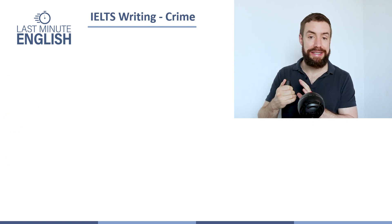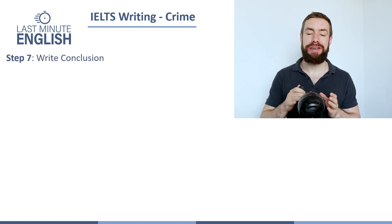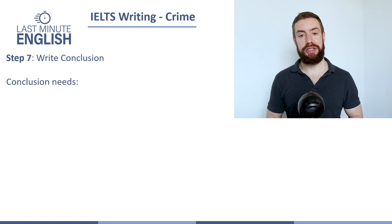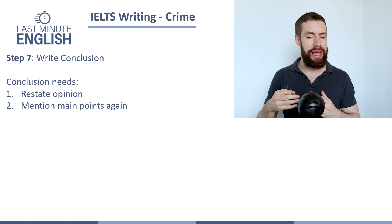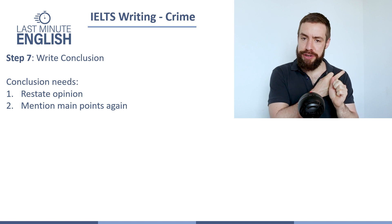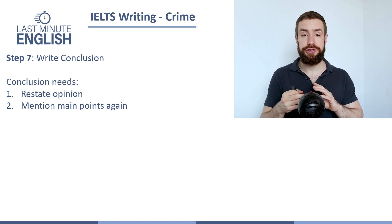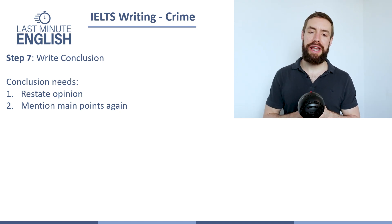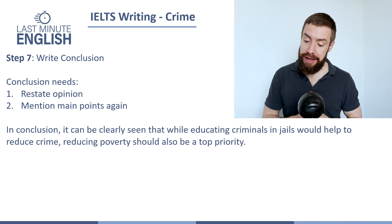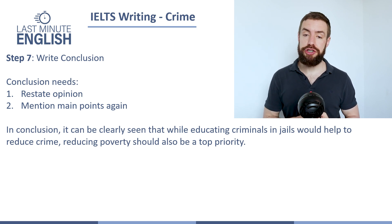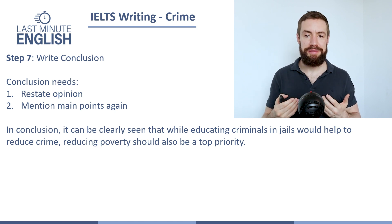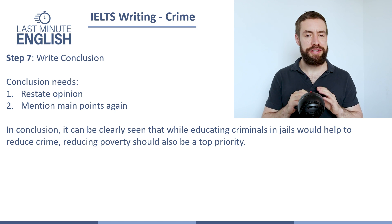Once we've finished our first and second body paragraphs, we get to step seven: writing the conclusion. The conclusion needs two parts: restate the opinion we have — in our case, that we partially agree — and mention our main points again: educating criminals and reducing poverty. If we do things well, we can do it in just one sentence. For example: 'In conclusion, it can be clearly seen that while educating criminals in jails would help to reduce crime, reducing poverty should also be a top priority.' We've mentioned both main points, given the opinion, and summarized everything.